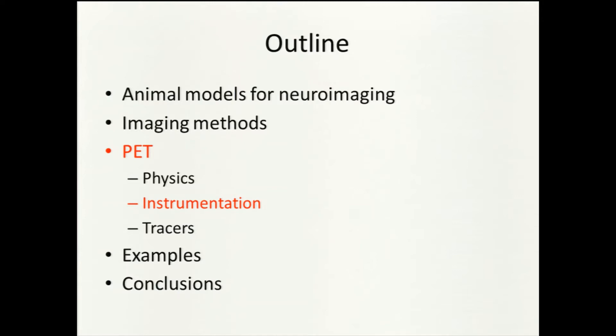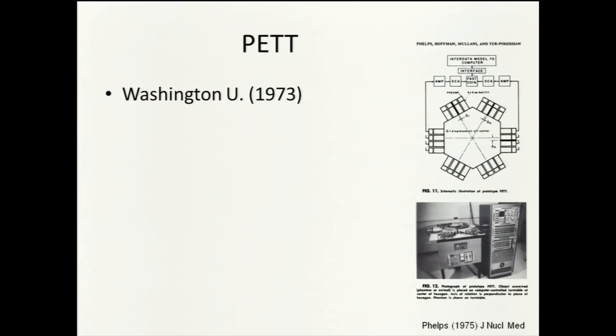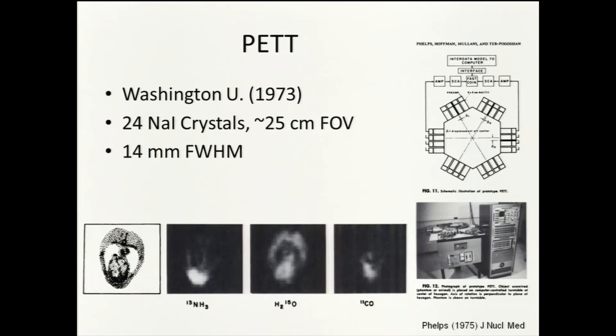The first actual PET scanner: in 1973 at Washington University in St. Louis there was the positron emission transaxial tomograph, consisting of 24 detector elements arranged around a 25-centimeter transaxial field of view, providing about 14-millimeter full-width half-maximum resolution. They were able to image a dog's chest with three tracers: radioactive ammonia labeled with nitrogen-13 for myocardial perfusion, radioactive water labeled with oxygen-15 for general perfusion, and carbon monoxide labeled with carbon-11 to label hemoglobin and look at red blood cells.